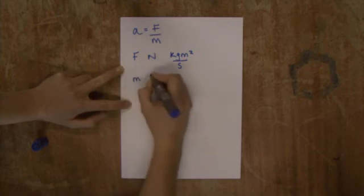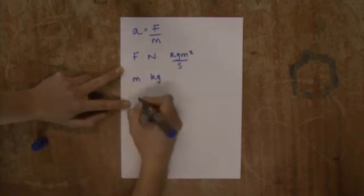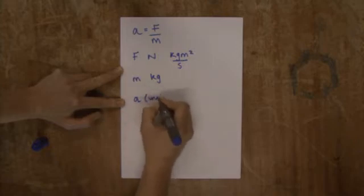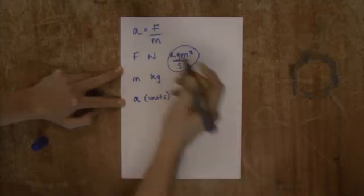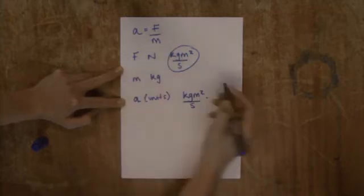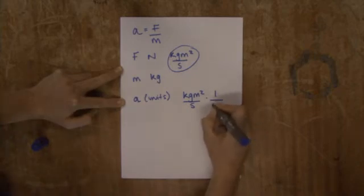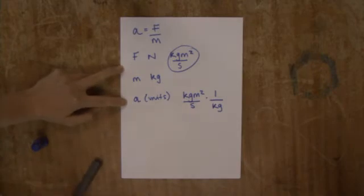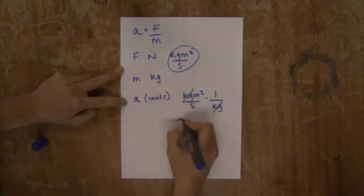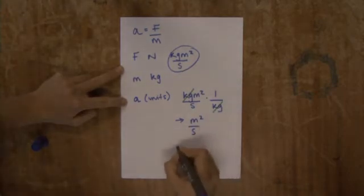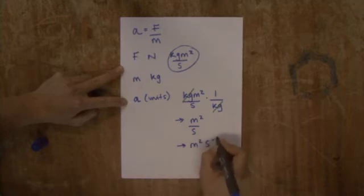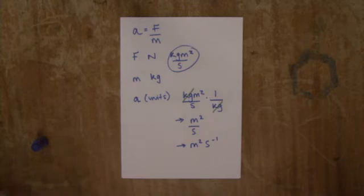The units of mass are kilograms. So for acceleration, we have the units of force — kilogram metres per second squared — divided by the units of mass, so multiplied by 1 over kilogram. Kilogram divided by kilogram equals 1, so those cancel. The units of acceleration are metres per second squared, which can also be written as metres per second to the minus 1 — the correct scientific notation.